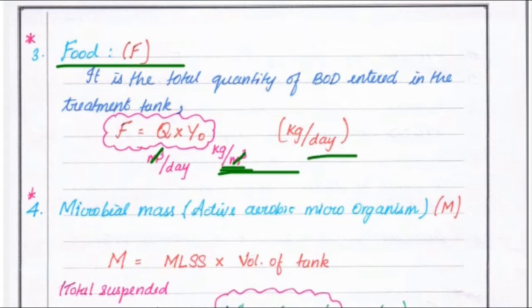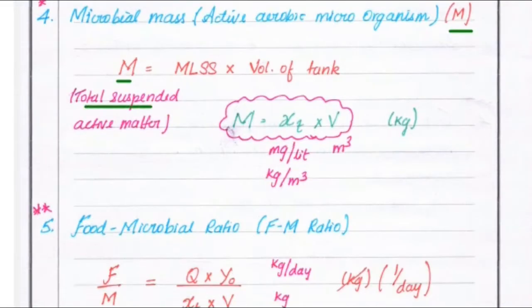Next is microbial mass, that is activated aerobic microorganisms, M. The formula is M equal to MLSS into volume of tank — total suspended active matter equals MLSS into volume of tank. So M equals XT into V, where XT is in kg per meter cube and V is in meter cube, giving a unit of kg.